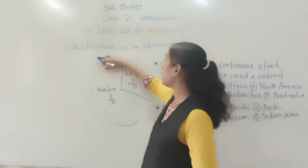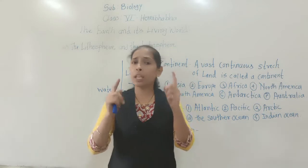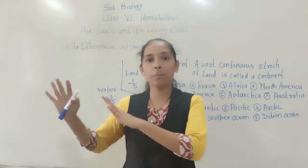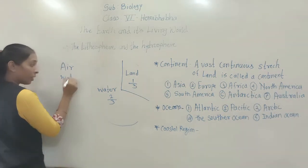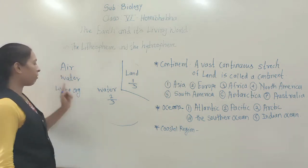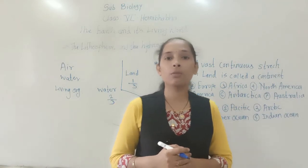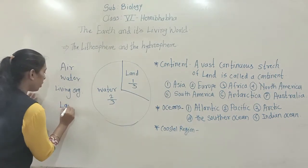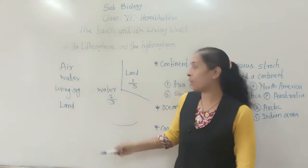We will first discuss the hydrosphere. Our earth is the only planet where there is water and air, and because of the presence of air and water, there are living organisms. So the earth contains water, living organisms, land, and air — all these are parts of our earth.